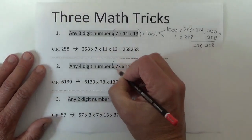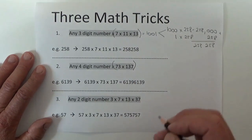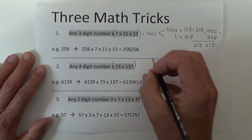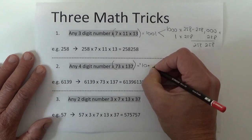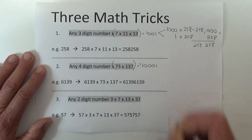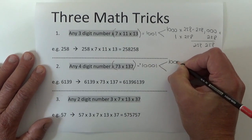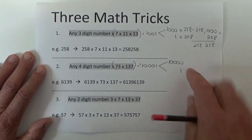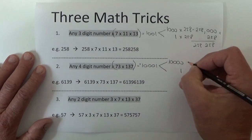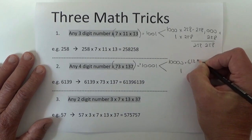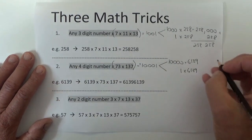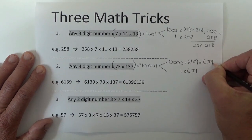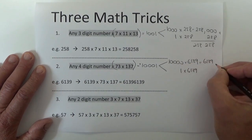The next one: 73 times 137 is the same as multiplying by 10001. And if you break that down into two parts, it's the same as multiplying by 10,000 and also multiplying by 1, and then adding those two numbers together. So we take 10,000 and multiply by 6139 — that's just 6139 with four zeros on the end.